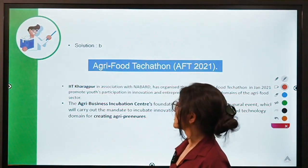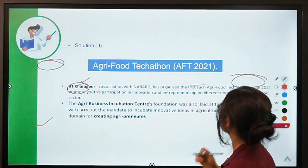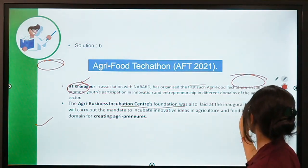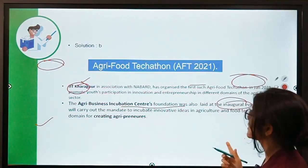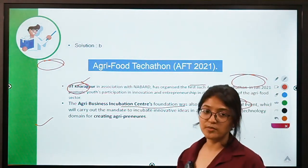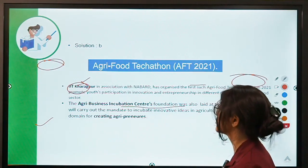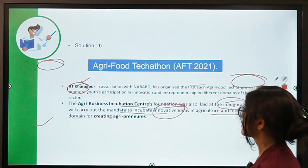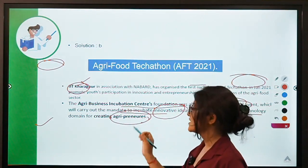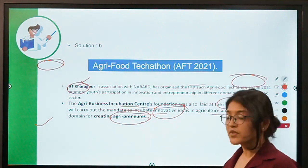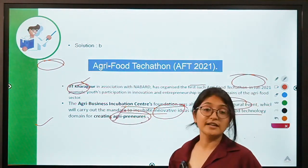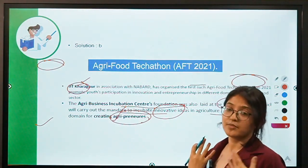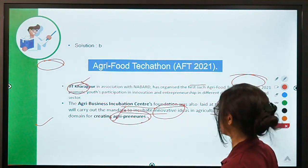IIT Kharagpur organized this Agri Food Techathon — the first of its kind in India — where different enterprises and youth startups came forward to present solutions for present agricultural challenges. At the inaugural event, the Agri Business Incubation Center was also launched at IIT Kharagpur. This center will incubate innovative ideas in the agriculture and food technology domain for creating agripreneurs — entrepreneurs specifically promoting agriculture enterprises.